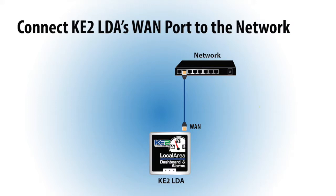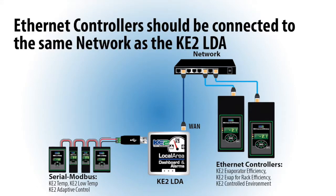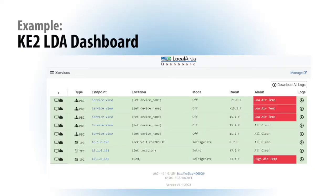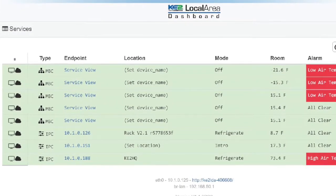First, you should have already installed the LDA on your network. If you haven't and need some help, we have a video covering that or you can call our tech support line. Your serial Modbus controllers like the KE2Temp and KE2LowTemp should be wired to the LDA, and if you have any Ethernet controllers like the KE2EVAP, they are connected to the same local area network as the KE2LDA. The KE2LDA dashboard will automatically populate with the first 10 KE2Therm controllers it sees on the network.